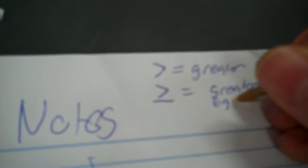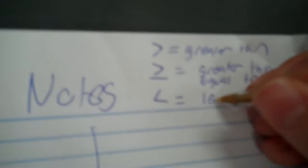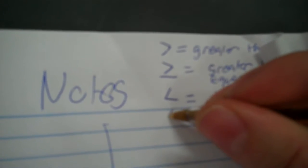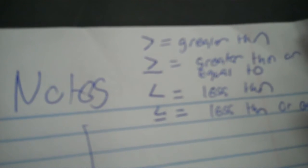Okay, next assignment: notes. Needs example. Now there's a couple things I want you to put. That sign right there means equals, that means greater than. This sign with a line under it means greater than or equal to. This sign means less than. This sign here means less than or equal to. These are called inequalities.